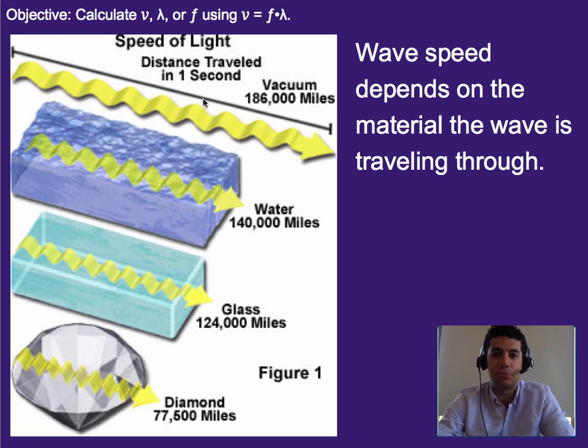So light, when it's traveling through empty space, so like a vacuum, no air, nothing in the way, in one second it can go 186,000 miles. But when it's traveling through water, it goes a little bit slower, and when traveling through glass, a little bit slower, and when traveling through a diamond, even slower yet.